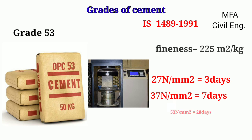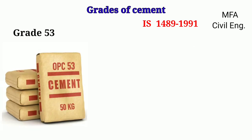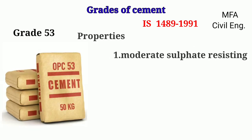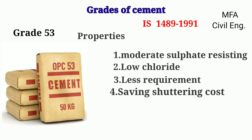The compressive strength for 53 grade is 53 N/mm² for 28 days of testing. This cement has various properties: moderately sulfur resisting, low chloride content, less cement requirement due to its high strength, surface area saving, saving in shuttering costs due to early removal, and speedy construction.